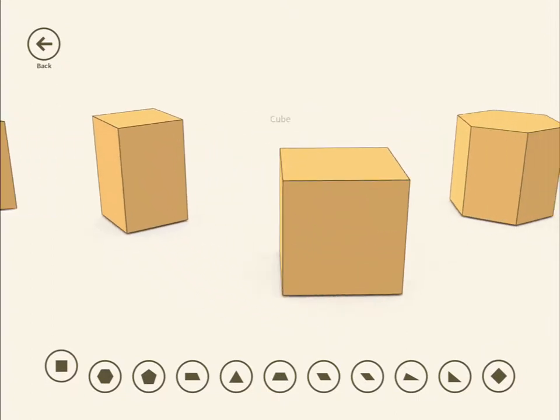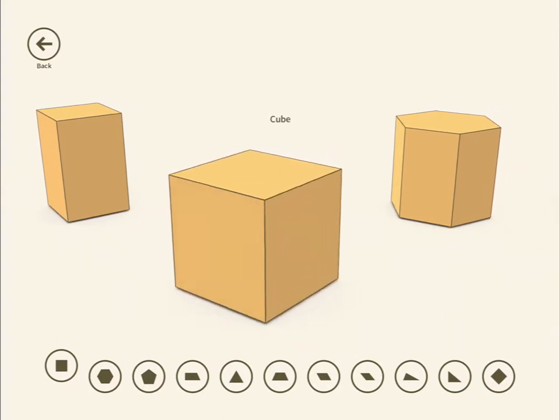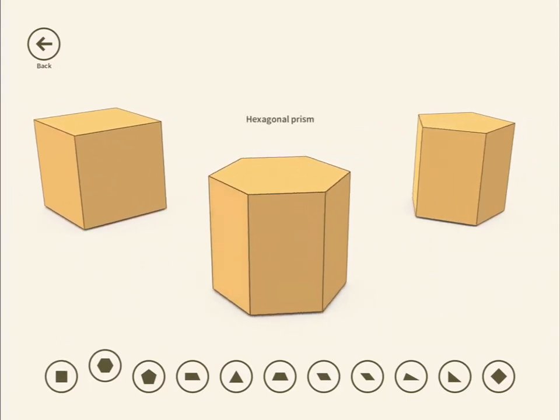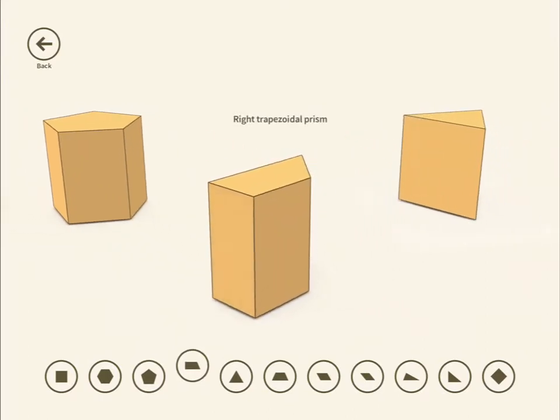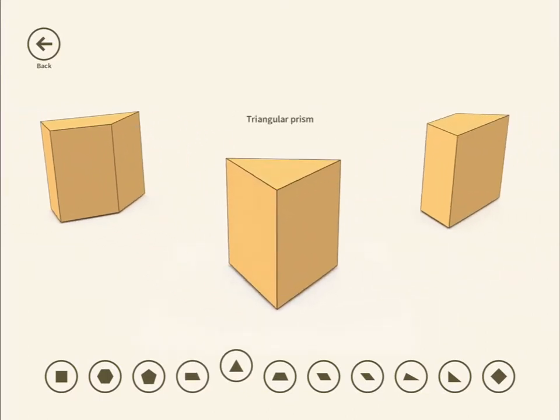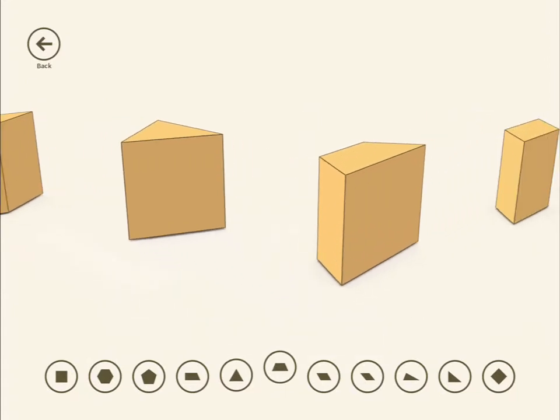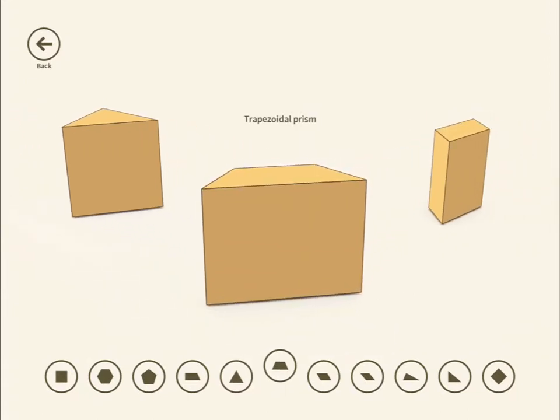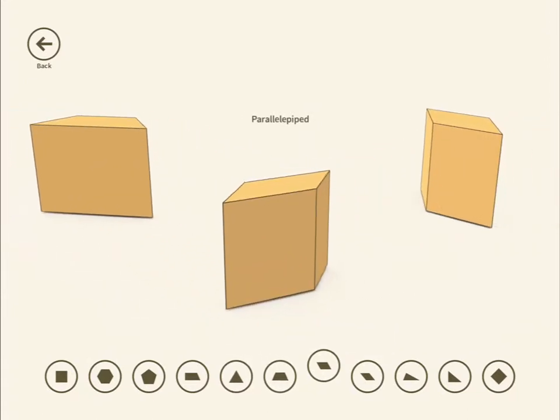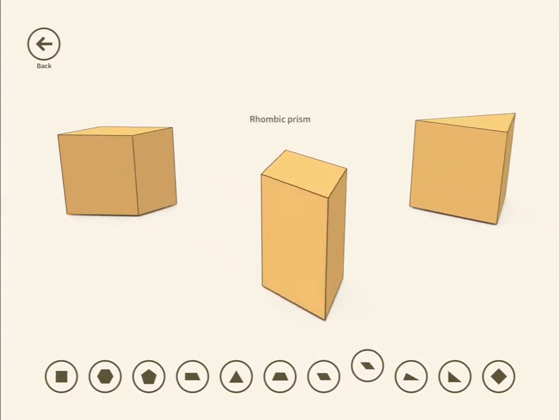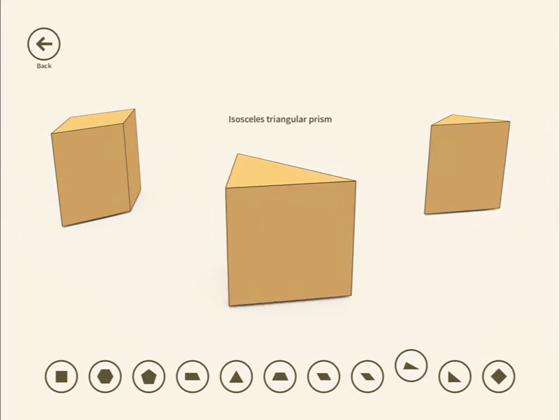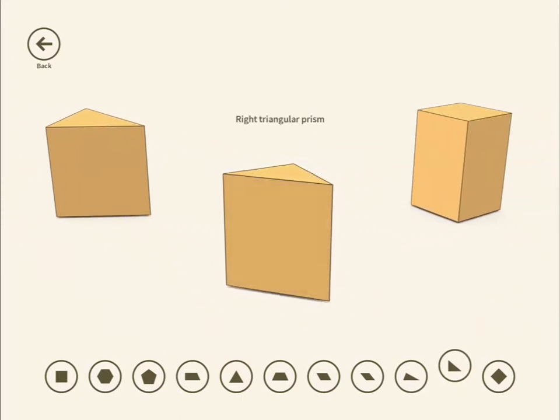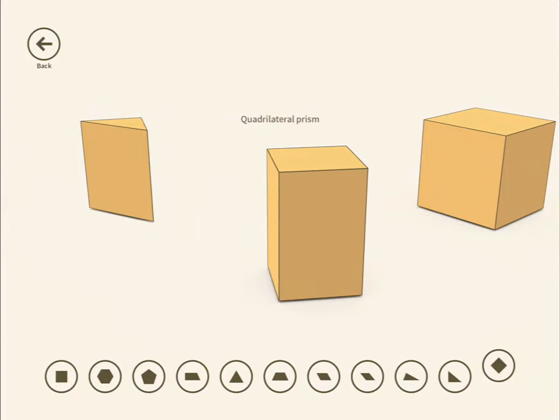This is called a quadrilateral prism, a cube, the most basic one, a hexagonal prism, a pentagonal prism, a right trapezial prism, a triangular prism, a trapezioidal prism, a parallipiped, a rhombic prism, isosceles triangular prism, a right triangular prism, and a quadrilateral prism.